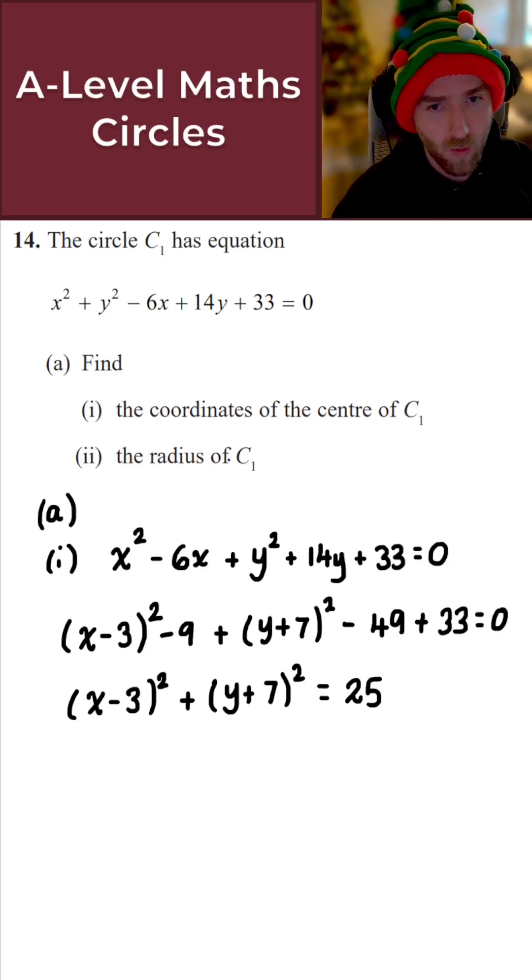And from here then, we can easily identify the coordinates of the centre of C1 and also the radius of C1. So for the centre here, just take the opposite to what we've got inside the brackets. Because this is x minus 3, my x-coordinate here for the centre is positive 3. The centre here is 3 for the x-coordinate.